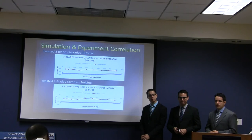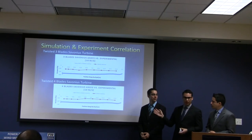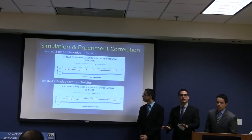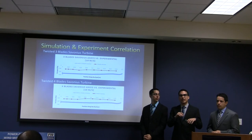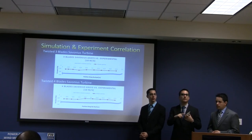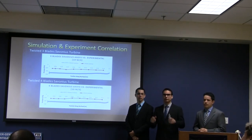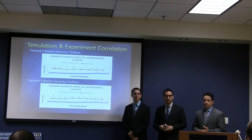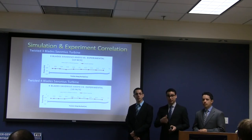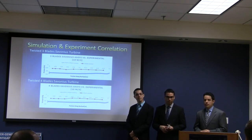The evaluator also noted that all the data was performed at 10 meters per second. The team clarified they also ran a full study at 8 meters per second and, for the three-blade Savonius, at 4, 5, 6, 7, and 10 meters per second. It might be worth showing one of those additional speed cases on a slide to demonstrate the range of wind speeds investigated. The evaluator pointed out that 10 meters per second corresponds to approximately 25 miles per hour, which is well below hurricane wind speeds, and the team should clarify that this is a qualitative study.